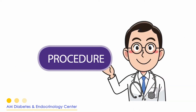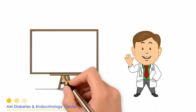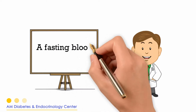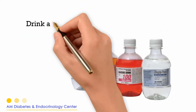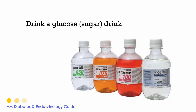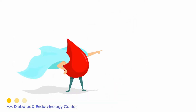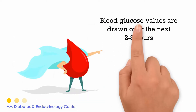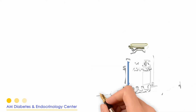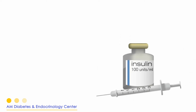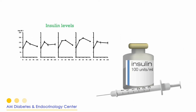Procedure: a fasting blood sugar is drawn. Drink a glucose sugar drink. Blood glucose values are drawn over the next 2 to 3 hours. Insulin levels should be drawn with each blood glucose check.